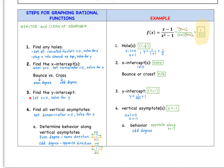Next we find the y-intercept. Remember, the y-intercept is when x = 0. Going to our cleaned-up version 1/(x + 1), we set x = 0 and solve: 1/(0 + 1) = 1/1 = 1. So the y-intercept is the point (0, 1).